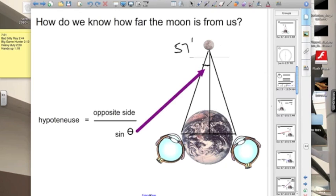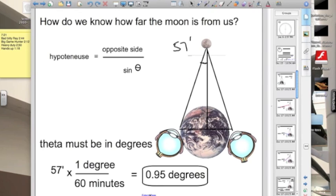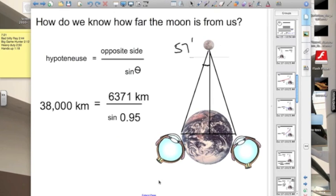Now let's calculate our distance to the moon using our trig function. In order to do this, the angle we measure, this 57 minutes, must be in degrees. So we're simply converting our 57 minutes into 0.95 degrees. With the radius of the earth being 6,371 kilometers, we crunch numbers and come up with 38,000 kilometers as our distance to the moon. Simple.